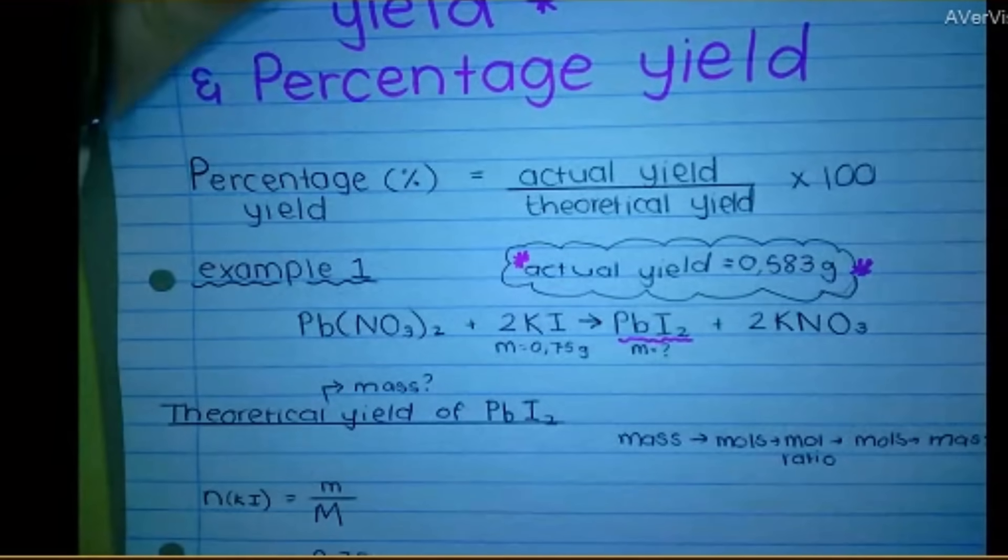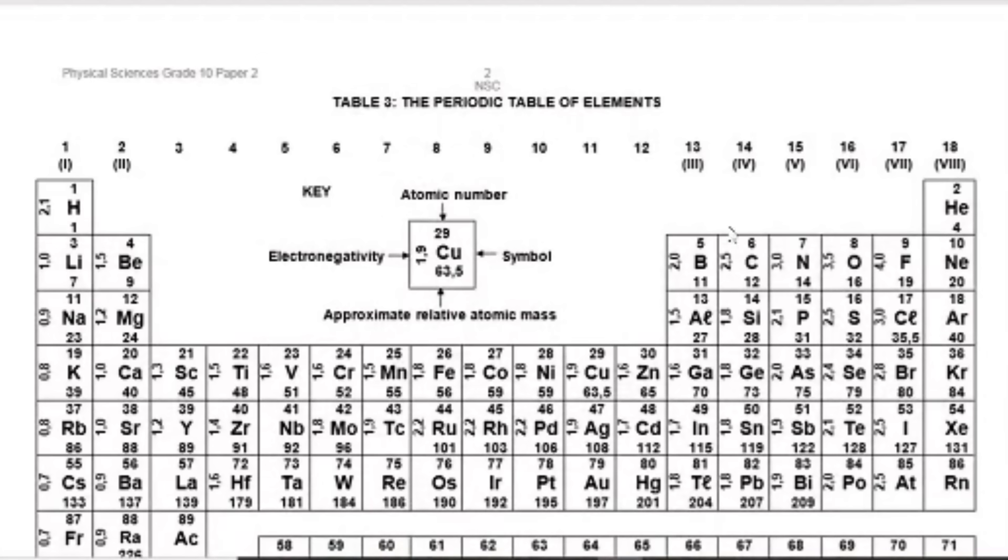So I'm going to need the atomic mass number of potassium, the atomic mass number of iodine. So this is where I go to my periodic table. Potassium, 39 and I, 127. So 39 plus 127.